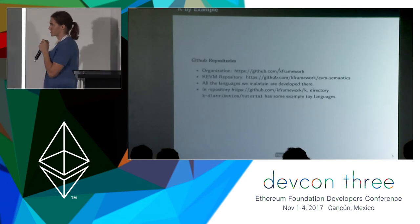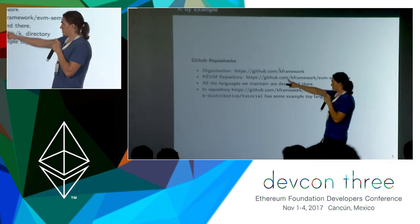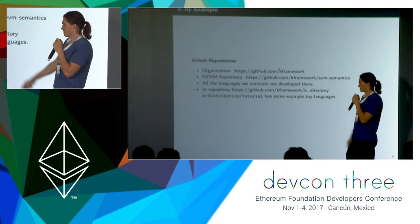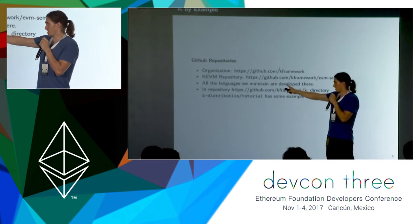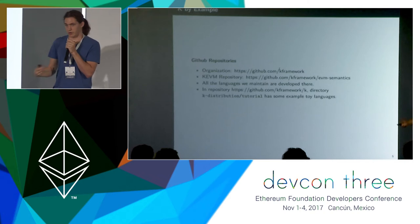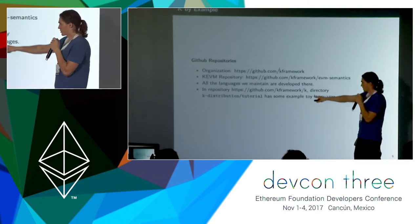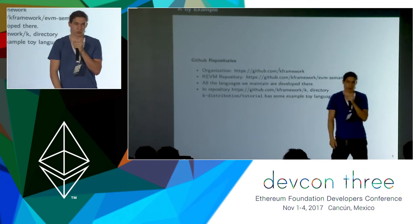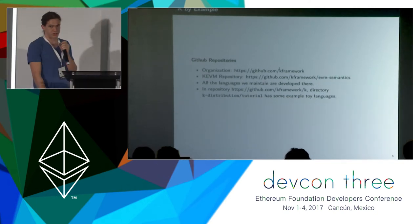Instead, what I'm going to focus on is this K-by-example thing. The organization we have on GitHub is the K framework organization. The EVM repository is at EVM semantics, and all of the semantics that we maintain are developed there. There are some semantics that other people maintain outside our organization. And directly in this repository, we have a directory with a bunch of toy languages you can play with to get familiar with K — that's a good place to start.